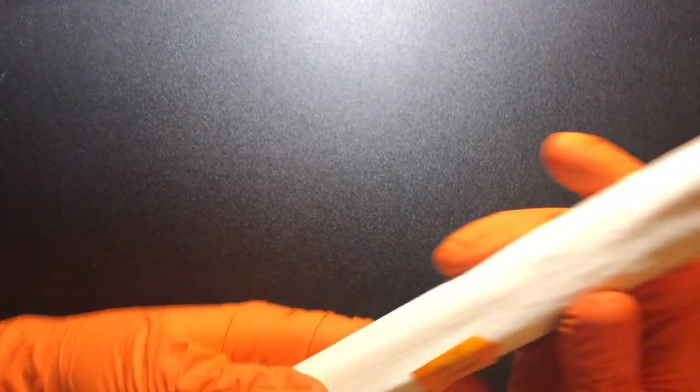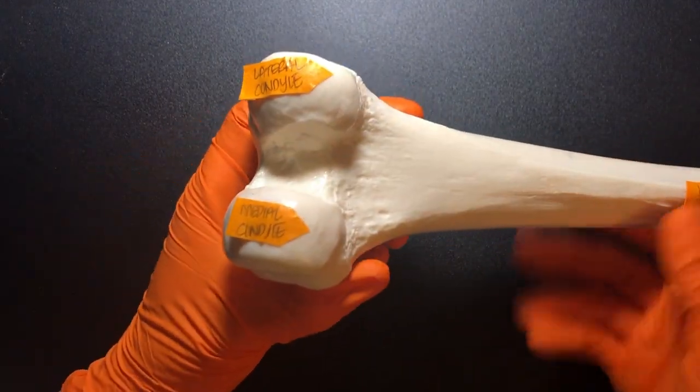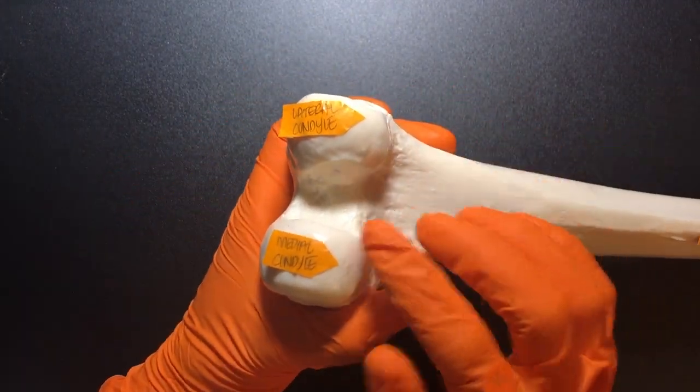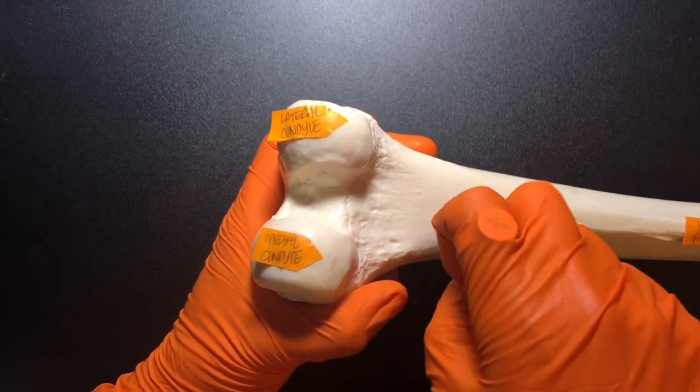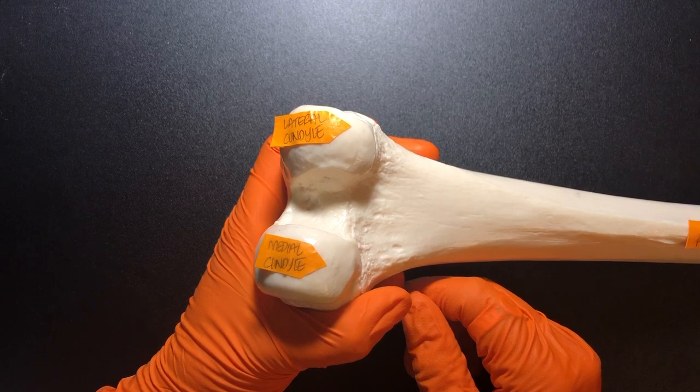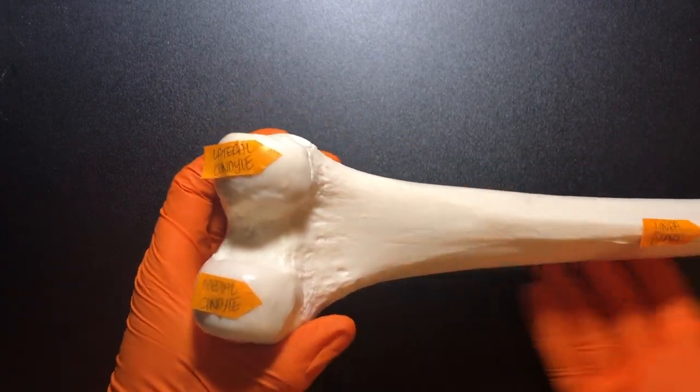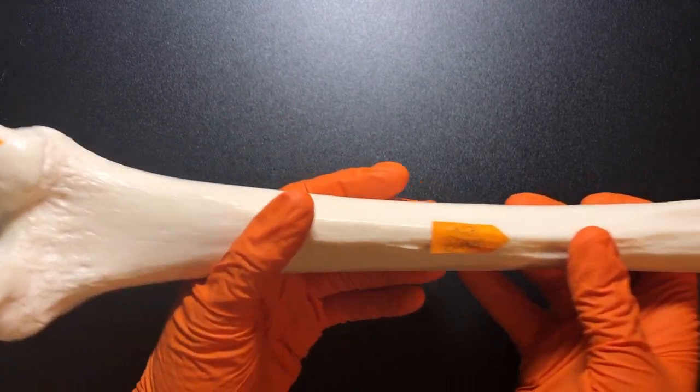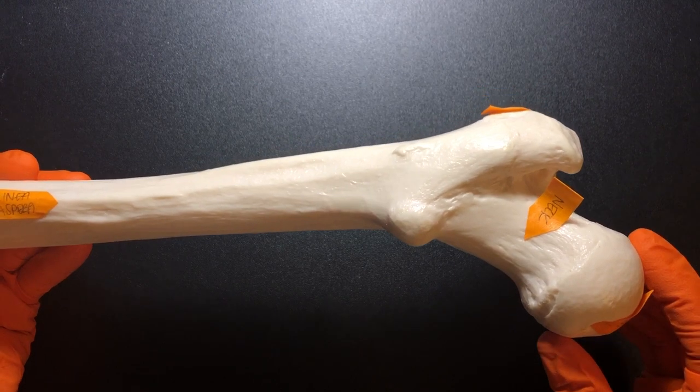At the distal end of the femur, we have these condyles. And you should recognize that term because we saw these knuckle-shaped structures at the base of the skull, those occipital condyles. So here it's the same thing. Unfortunately, my desk is not big enough to show this whole femur. So let's kind of, we'll go back and forth.